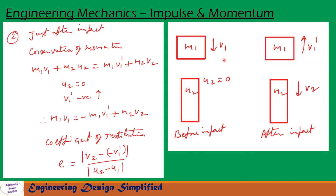Just before impact, the hammer has mass m1 and velocity v1 downward. The pile has mass m2 and initial velocity u2 equal to zero. After impact, the hammer rebounds and gains a velocity v1′ in the upward direction, while the pile gains a velocity v2 in the downward direction.